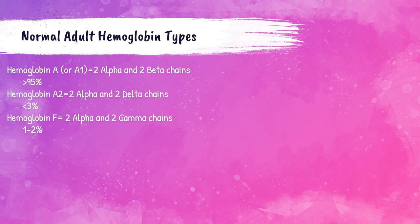Just as a reminder, these are the normal adult hemoglobin types. Hemoglobin A, also referred to as hemoglobin A1, accounts for greater than 95% of all hemoglobin types in a normal adult patient — it's created with two alpha and two beta globin chains. Hemoglobin A2 accounts for less than 3%, created with two alpha and two delta globin chains. Hemoglobin F accounts for 1–2%, created with two alpha and two gamma chains. For a more detailed review, please check out my hemoglobin lecture.